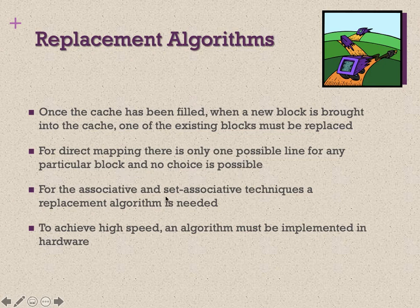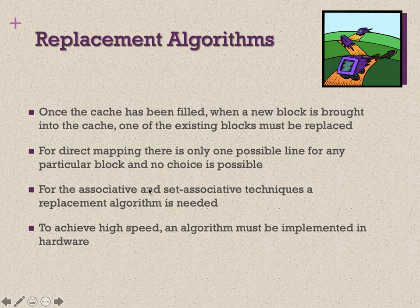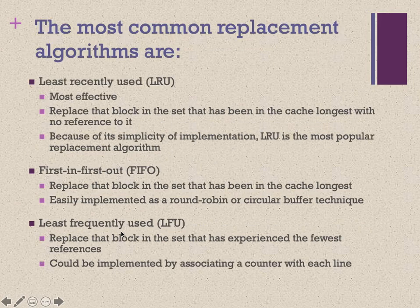For associative and set-associative techniques, a replacement algorithm is needed. Direct mapping is a simple technique, but associative and set-associative techniques are more complicated. Recent architectures use set-associative techniques, so we need to understand replacement algorithms. These algorithms must be implemented in hardware to achieve high speed.